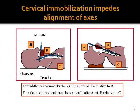This illustrates how cervical spine immobilization impedes intubation. In the first diagram, the patient's neck is immobilized and the axes of the airway are not aligned. The ideal situation, shown in the second diagram, is to align the oropharyngeal, pharyngeal, and tracheal axes for ease of intubation — which is usually difficult when the patient's neck is immobilized.